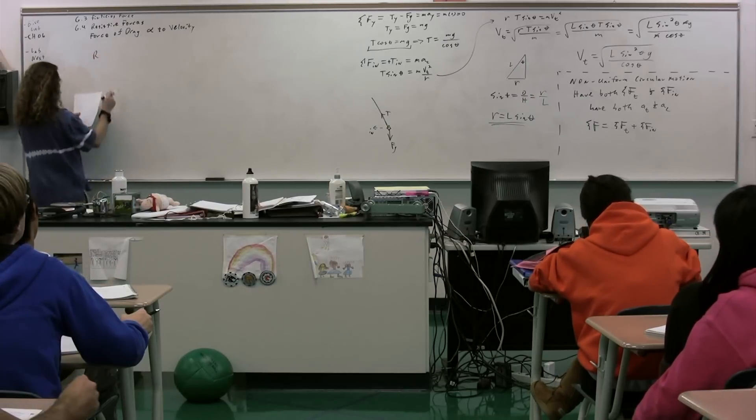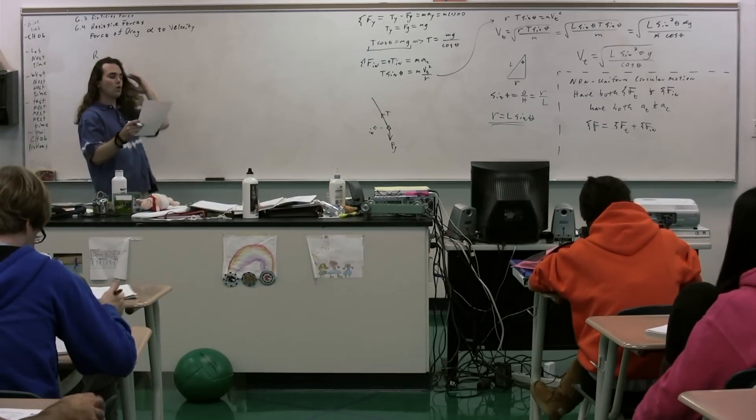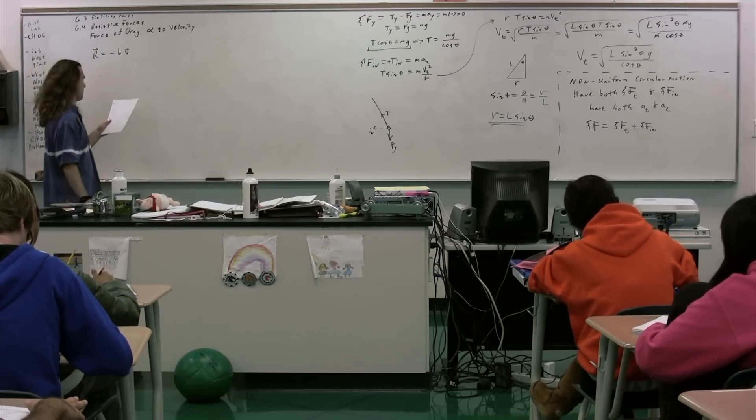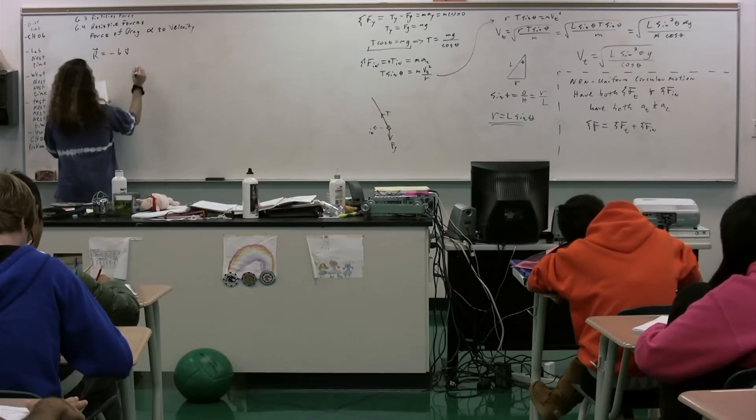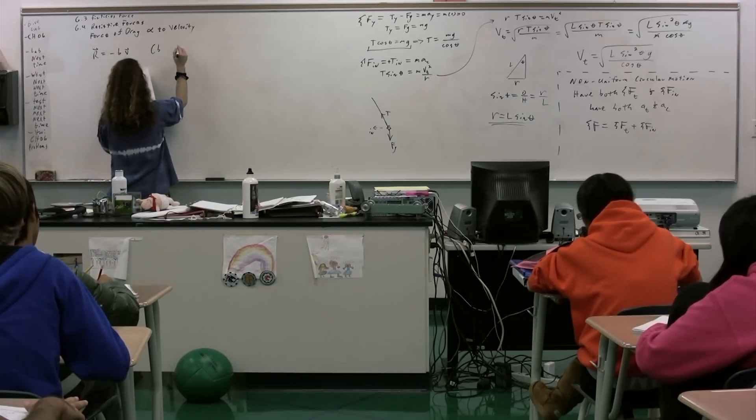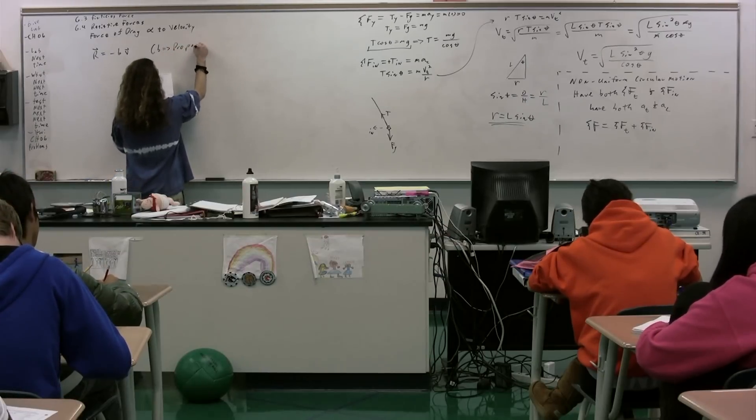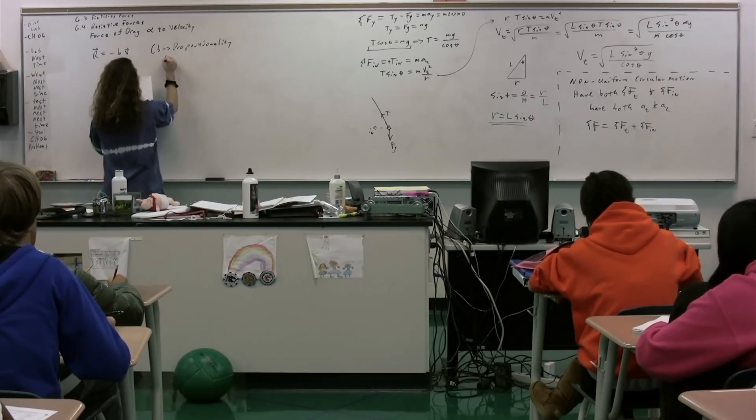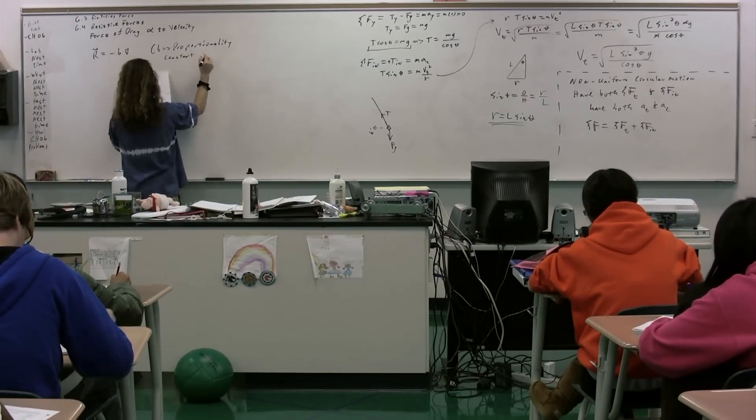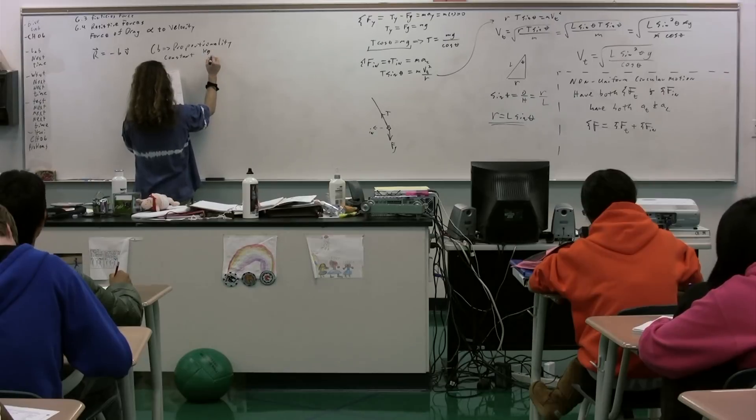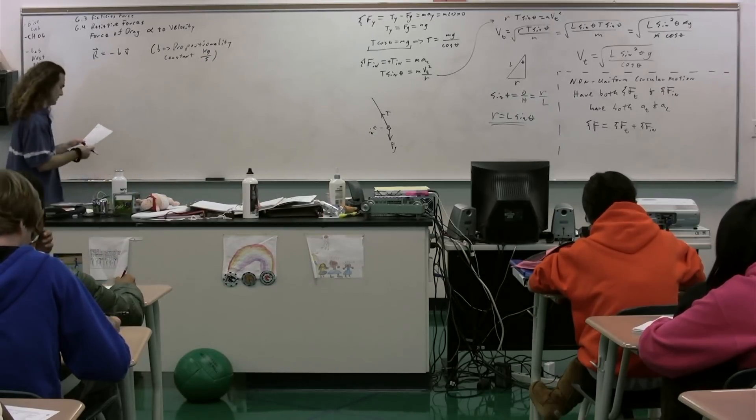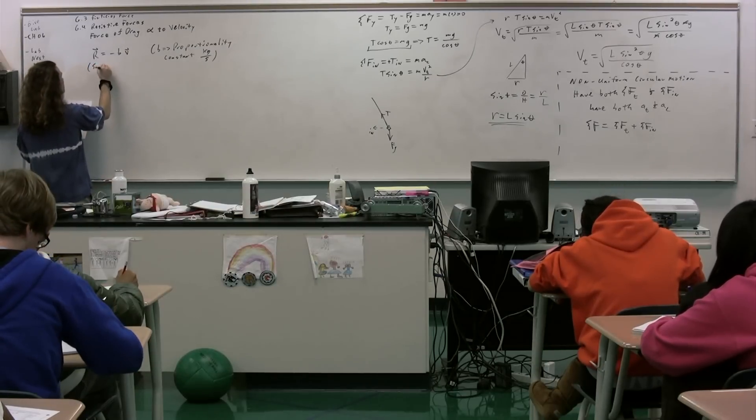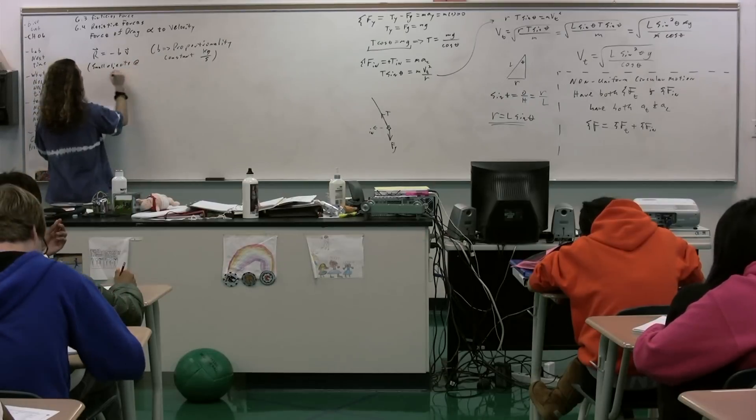So there are two different equations we have for resistive forces. One is that the resistive force, which is a vector, is equal to negative B times the vector V. And this B is called the proportionality constant. It has dimensions of kilograms per second. This equation is generally true for small objects at small speeds.